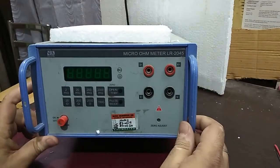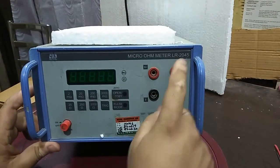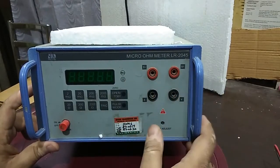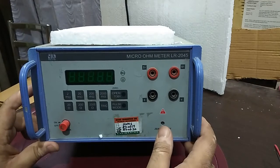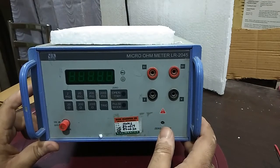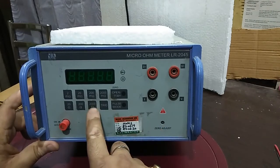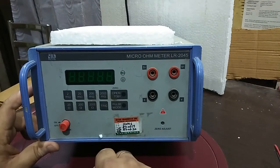Let's see. Its model number is LR2045 and the specification is a four and a half digit micro-ohm meter. The least count is one micro-ohm and the range goes up to 2,000 ohms.